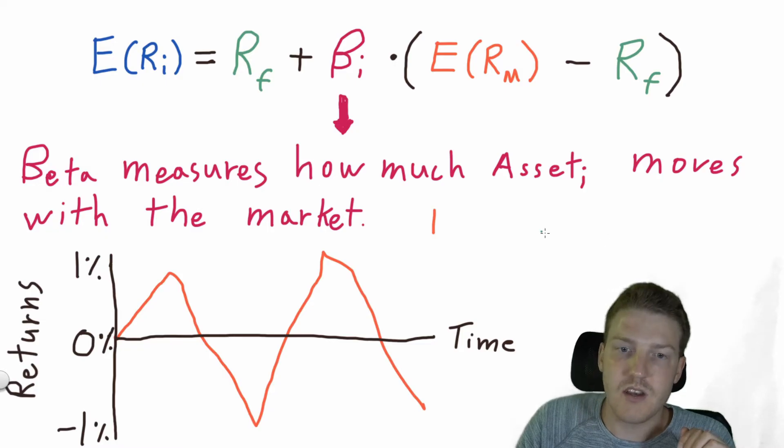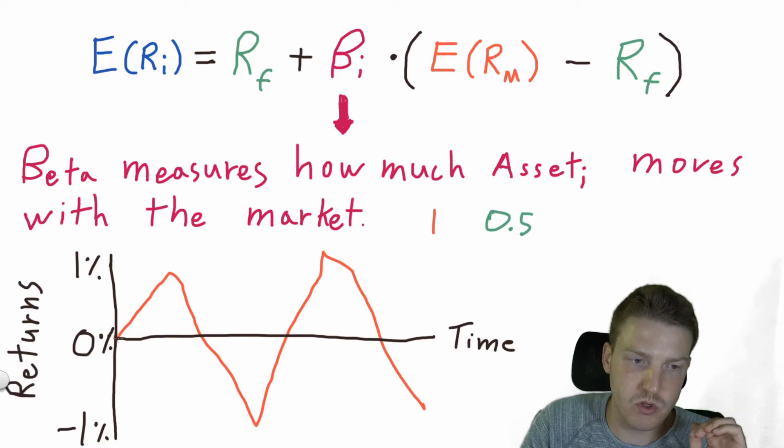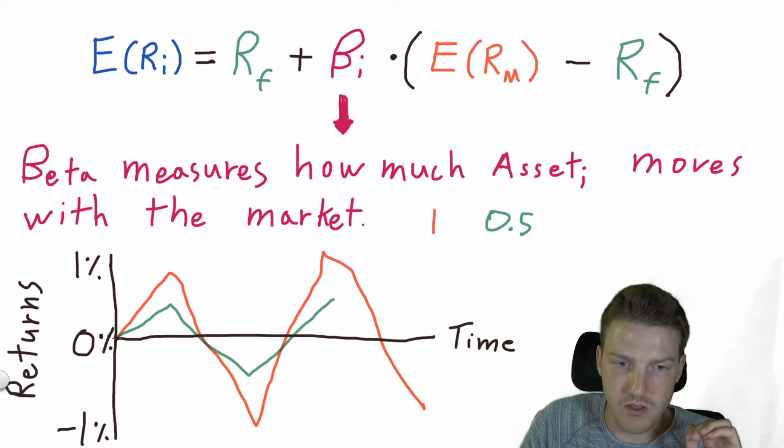So let's say asset I actually has a beta of 0.5. This makes it less risky than the market. So we'll see when the market goes up, it still goes up, but only by roughly half as much as the market. When the market goes down, it goes down, but only by half as much as the market. So you can see that it is far less volatile than the market.